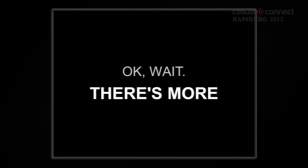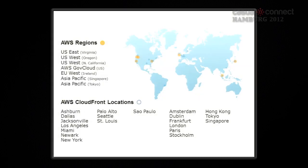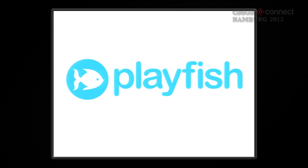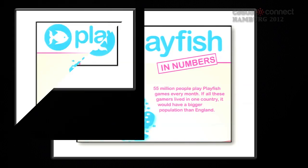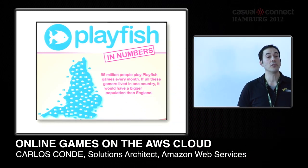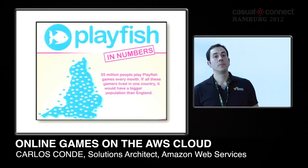Now we know how to build a game platform on the AWS cloud. Let's look at the other benefits. The first is global reach. You start a game and from day one you can launch on several data centers and locations around the world. Playfish understood this well — in 2009 they had more than 55 million players because right from day one they built their game for the whole world, using several regions on the Amazon cloud.